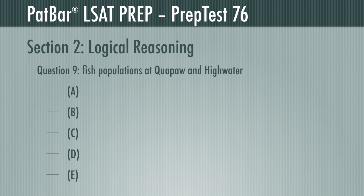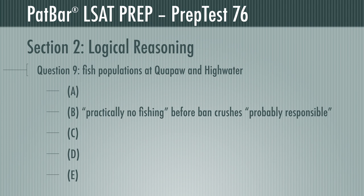Question 9 presents an essay on the decline of fish populations in two lakes — Quapaw and High Water — and the rebound of that population in Quapaw Lake. It concludes that the fishing ban at Quapaw, with no such ban at High Water, must be the reason. You are tasked with finding the answer which, if true, most seriously weakens the argument. If there was practically no fishing at Quapaw before the ban, this argues against fishing being the cause of the decline in the first place, never mind the resurgence. B is correct.